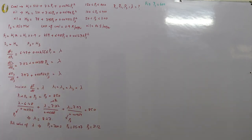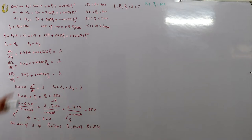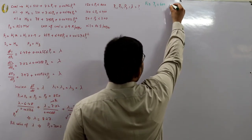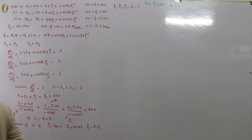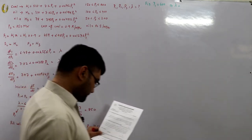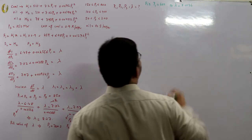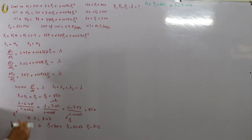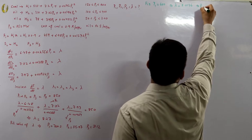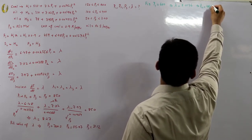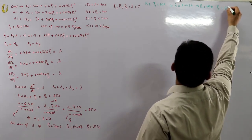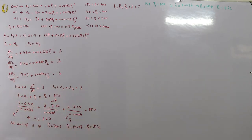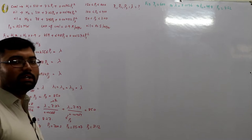With p1 fixed at 600 MW, find λ from the df1/dp1 equation: λ = 8.0136. Substituting this into the p2 and p3 expressions gives p2 = 49.89 MW and p3 = 4.52 MW — p3 is still below its minimum of 50 MW, so we've missed again.